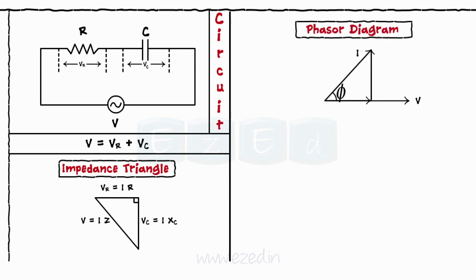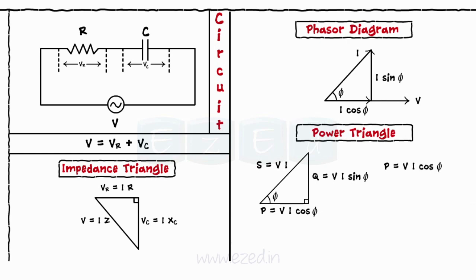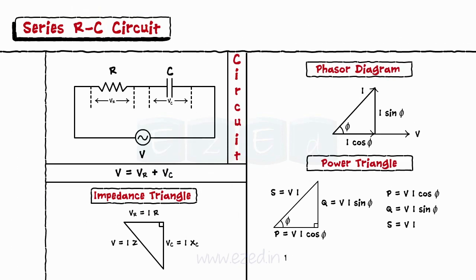In this case, considering the voltage as a reference, the current leads the voltage by angle phi. Similar to the series RL circuit, for the series RC circuit the power triangle is drawn as shown with P equals VI cos phi, Q equals VI sin phi, and S equals V into I, and the power factor equal to cos phi equal to P upon S.